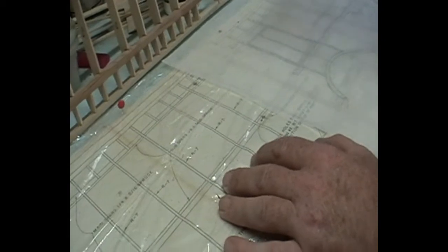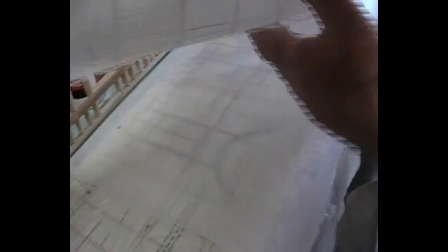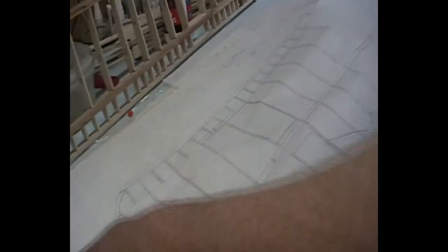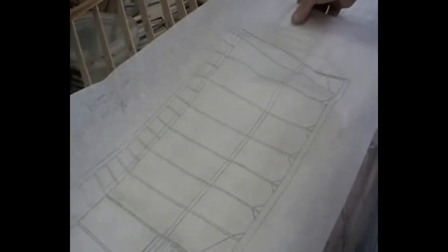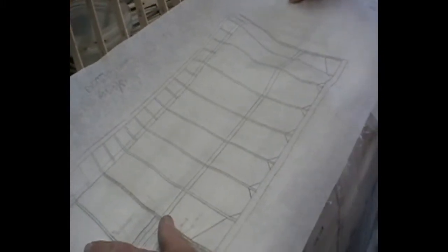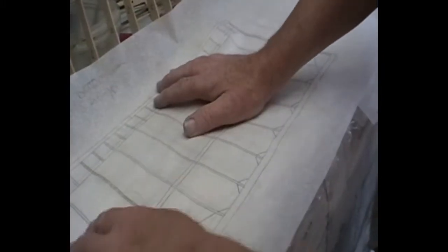So what I've done, you can see here, I've traced it. You just get the tracing paper as we used to call it at school, or grease proof, put it over the top of the original plan, pin it all down and draw it out.